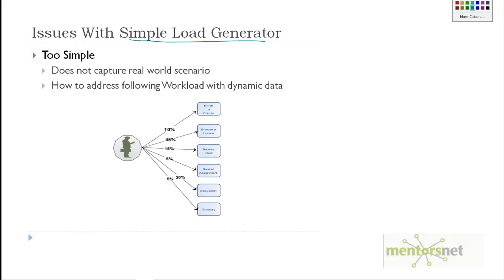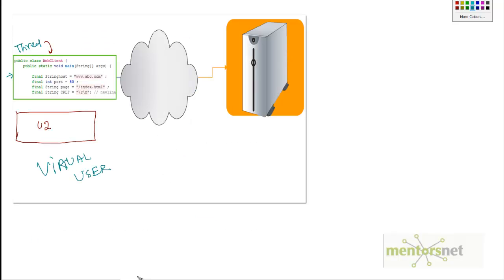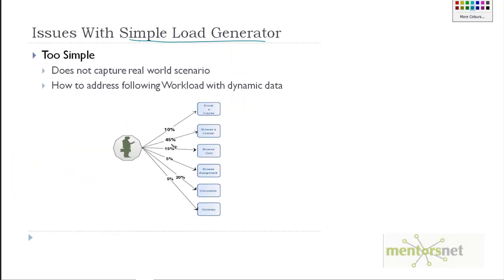If you look at the simple load generator, it's nothing but just going to read some activities from some configuration file and then get those things. It does not give you this kind of percentage distribution that we specify in our workload. That means this load generator is too simple and it does not capture real world scenarios.